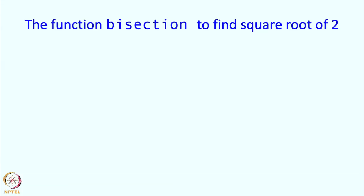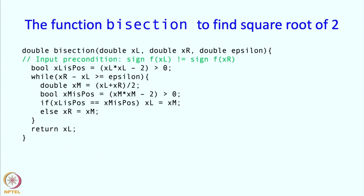Let me start with the bisection function that we wrote some time ago to find the square root of 2. This function is meant to find the root of any function, and we are using it to find the square root of 2 by finding the root of x squared minus 2. Since x squared minus 2 equals 0 at square root 2, finding that root gives us square root of 2.